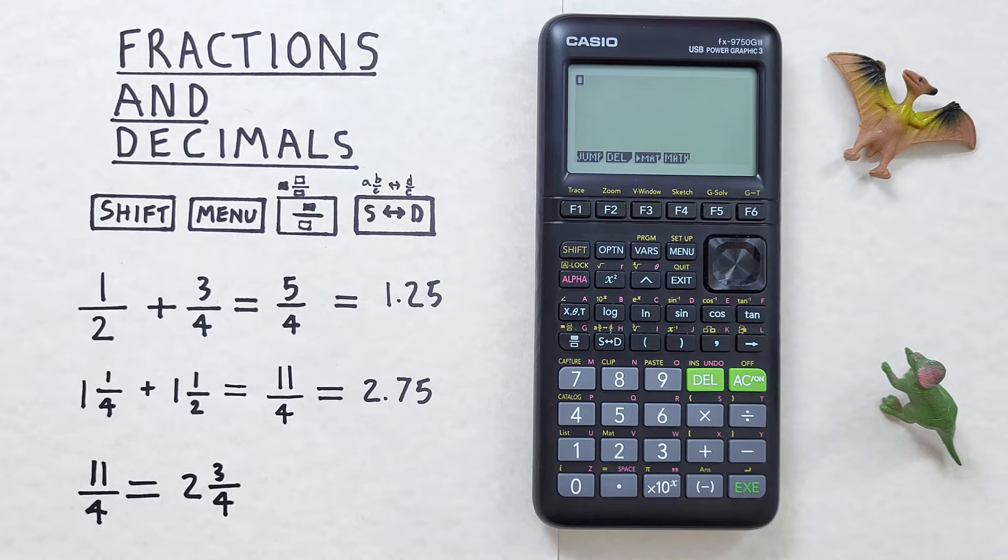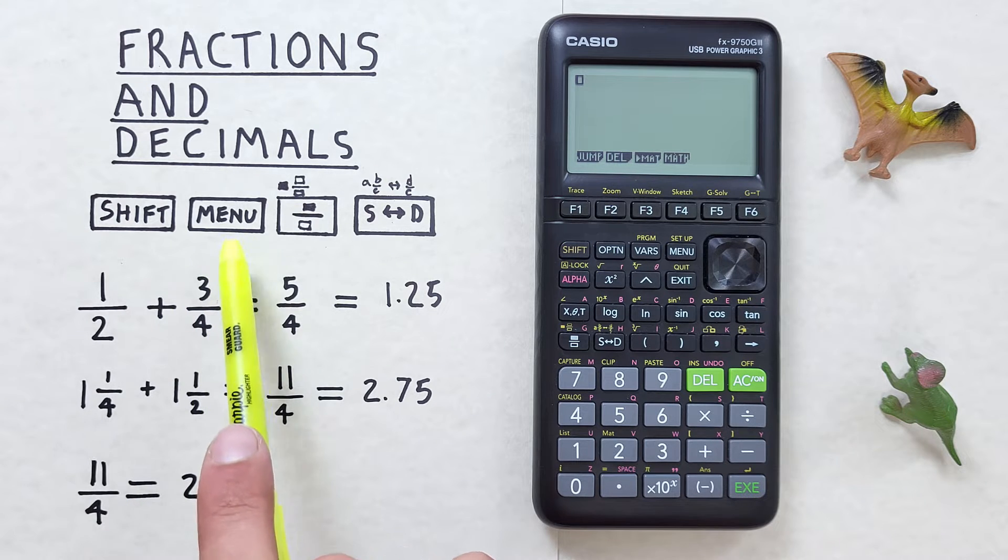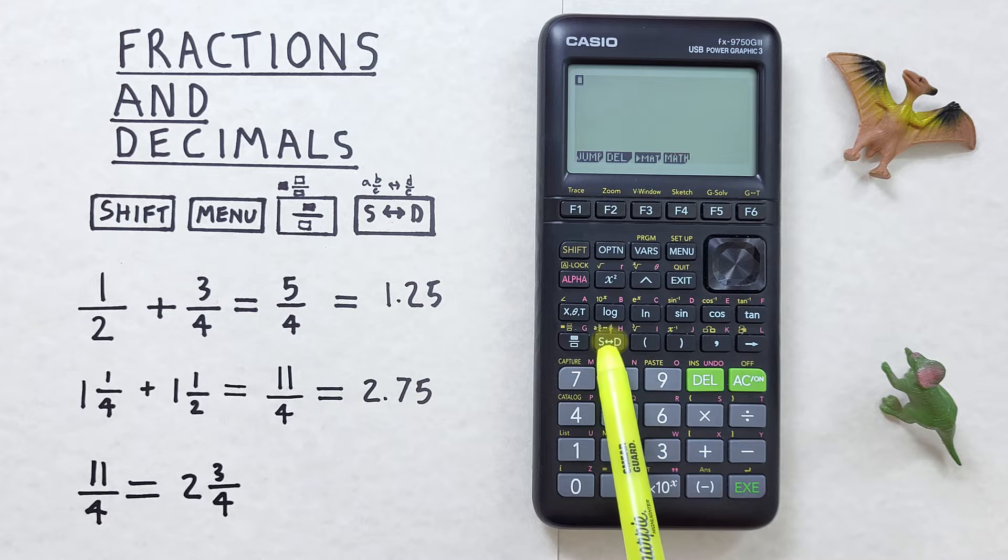To do that we'll use the shift key that looks like this located here, the menu key that looks like this located here, the fraction key that looks like this located here, and the S to D key that looks like this located here.